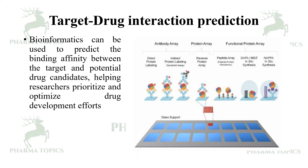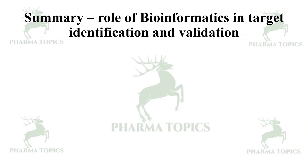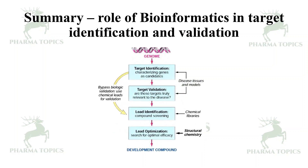Antibody arrays, protein arrays, and functional protein arrays can all have their data compiled with the help of bioinformatics. In summary, the role of bioinformatics in target identification and validation: data from the genome or proteome is gathered and validated to identify the best leads. Leads are optimized and a new compound is developed, then validated with in vitro, in vivo, and human studies.